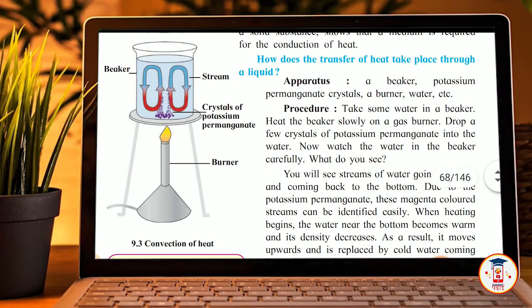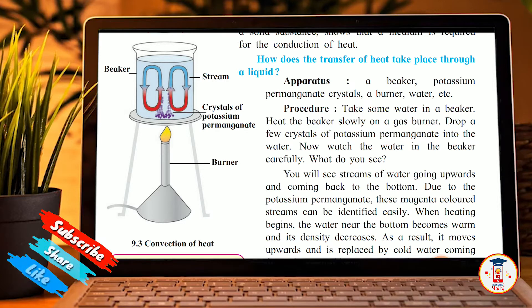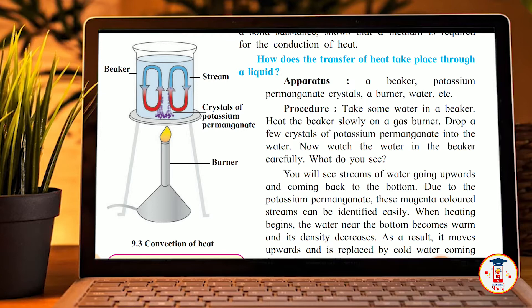Now we will see the next experiment. How does the transfer of heat take place through a liquid, where a medium is required? We will see how heat works with liquid particles and water. First of all, take some water in a beaker. Heat the beaker slowly on a gas burner. Drop a few crystals of potassium permanganate into the water. Now watch the water in the beaker carefully. What do you see?